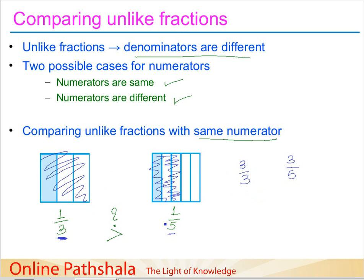It is straightforward that 3/3 is greater than 3/5. Similarly, 2 parts out of 3 versus 2 parts out of 5 — it is straightforward that 2/3 is greater than 2/5. To summarize: when the numerators are the same in unlike fractions, the fraction with the smaller denominator is the bigger fraction — it represents a bigger part.